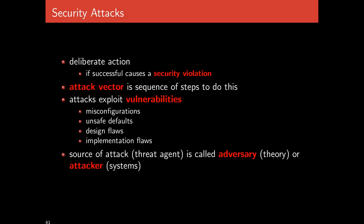A security attack is a deliberate action which, if successful, causes a security violation. An attack vector is a sequence of steps required to carry out a security violation. Attacks exploit vulnerabilities — things like misconfigurations, unsafe defaults, design flaws, and implementation flaws. A design flaw means every implementation will likely have the vulnerability; an implementation flaw means just that particular implementation. The source of an attack is called the threat agent — an adversary in theoretical terms, or an attacker when speaking about actual systems.